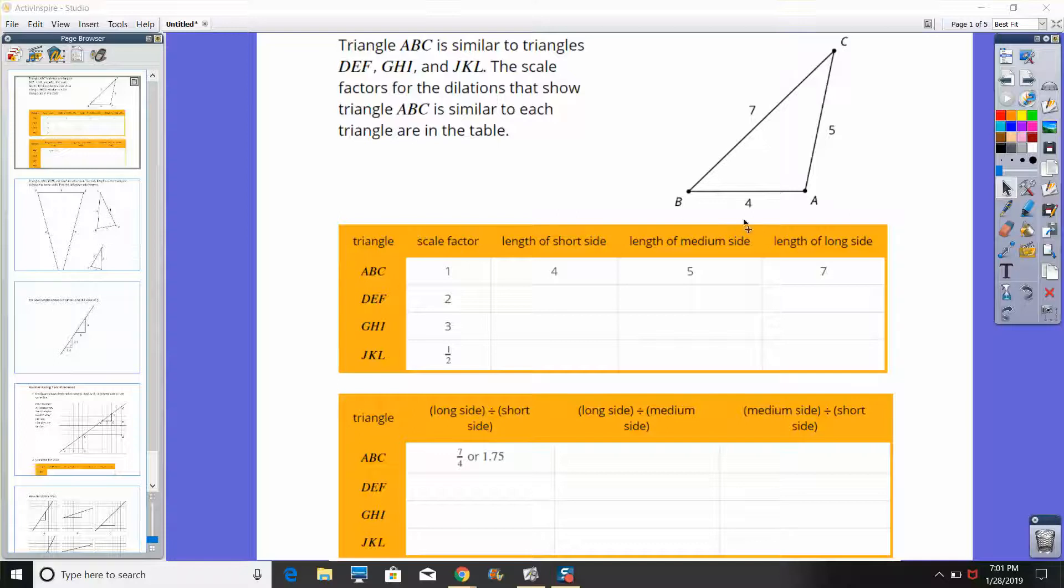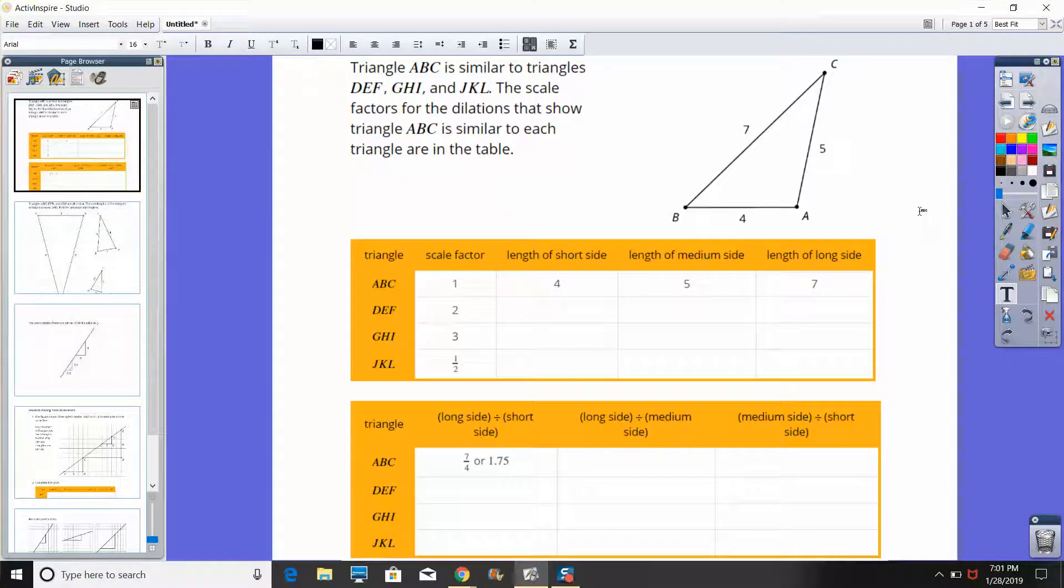I'm not going to do the entire table because you probably already did this in class but this is sort of the idea here. If you have triangle ABC, which is 4, 5 and 7 for its side lengths, AB is 4, AC is 5 and BC is 7. The short side is 4, 5 and 7 all the way up to the long side.